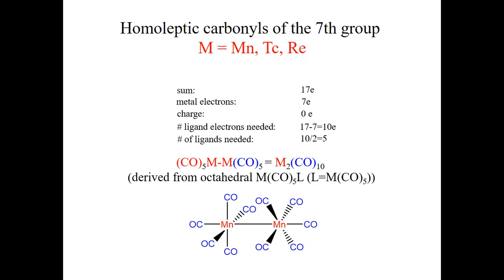The structure of Mn₂(CO)₁₀ has equatorial and axial carbonyl ligands — two axial and four equatorial CO ligands for each manganese atom. These two squares of equatorial ligands are rotated 45 degrees relative to each other to minimize steric repulsion between the carbonyl ligands, determining the overall staggered shape of the molecule.